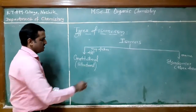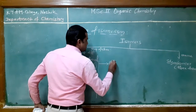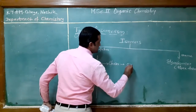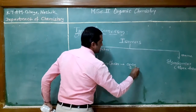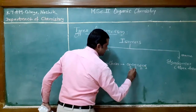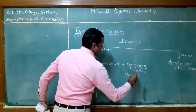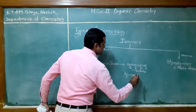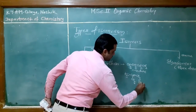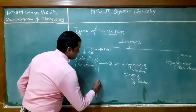Constitutional isomers are further categorized. First is chain isomers — in chain isomers, only the chain is different. For example, consider n-butane and isobutane. The molecular formula is the same, but the structural chain is different. That is why they are called chain isomers.